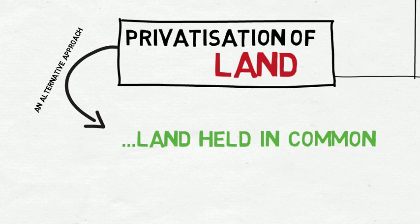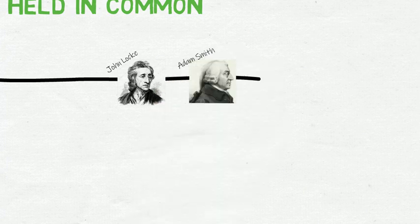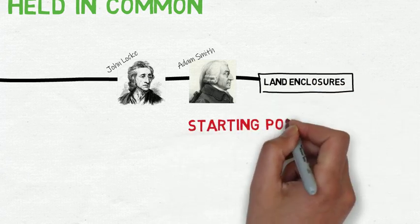So why is private land so critically important? Well, many notable people in history have said that it's absolutely central. Market pioneers John Locke and Adam Smith put land privatisation, known as land enclosures, at the very foundation and starting point of capitalism.